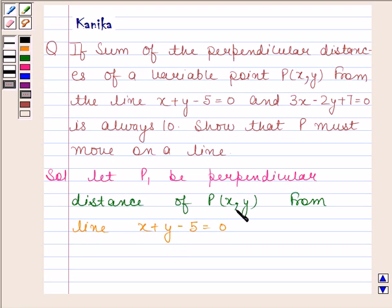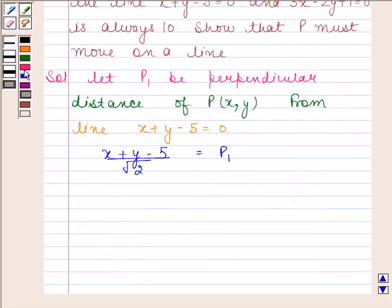The perpendicular distance of point P(x,y) from the line x+y-5=0 is (x+y-5)/√2, which equals P₁.